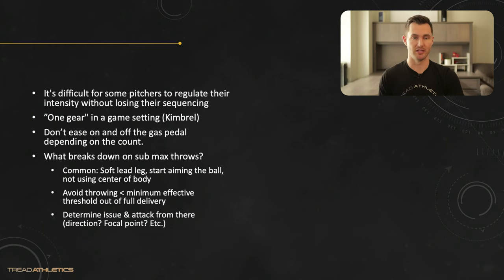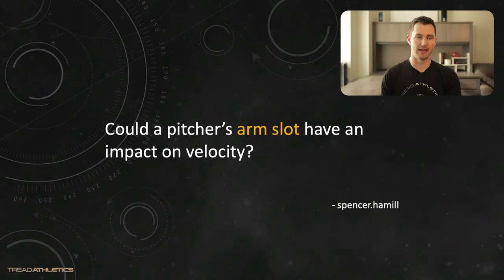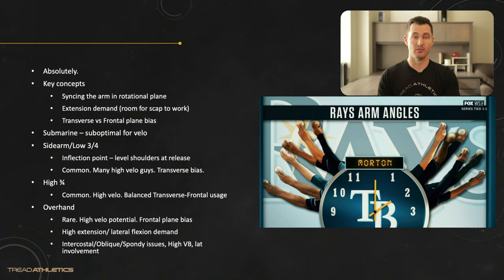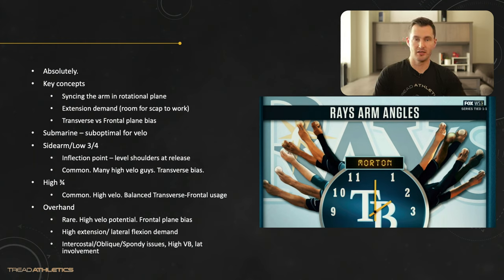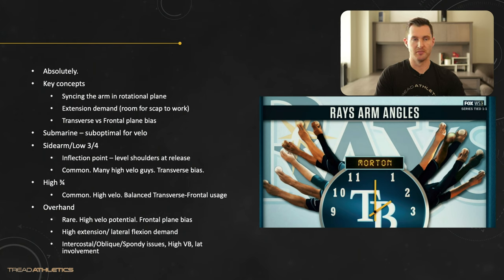Next question: could a pitcher's arm slot have an impact on velocity? Absolutely — arm slot will impact velocity, especially at the extremes. Think about a submarine pitcher versus a straight overhand pitcher: nine times out of ten it's going to be the overhand pitcher throwing harder. The key concepts for maximizing velocity and efficiency, regardless of arm slot, are: sinking the arm into the rotational plane as you begin to rotate.